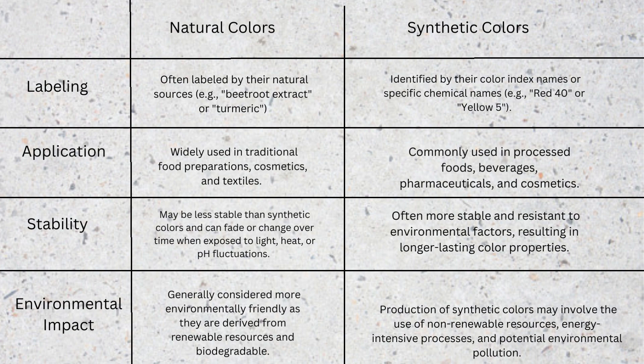Fifth, labeling: natural colors are often labeled by their natural sources, such as beet extract or turmeric, while synthetic colors are identified by their color index name or specific chemical name, for example Red 40 and Yellow 5. Sixth, application: natural colors are widely used in traditional food preparation, cosmetics, and textiles, while synthetic colors are commonly used in processed foods, beverages, and cosmetics.